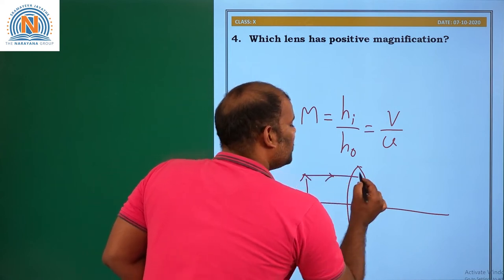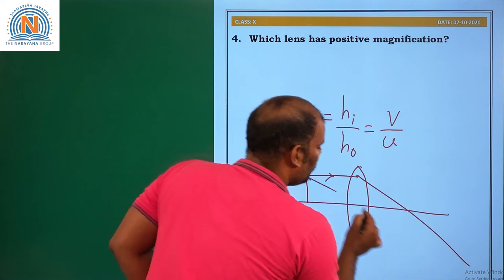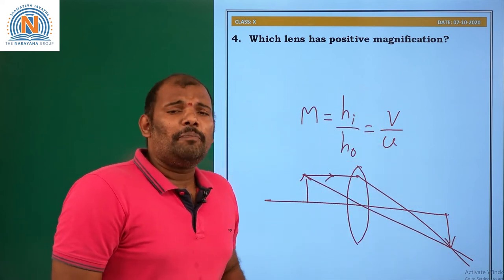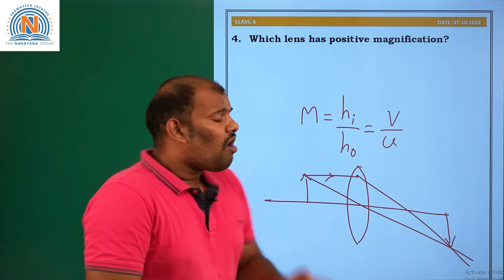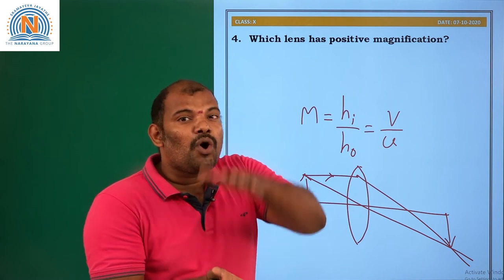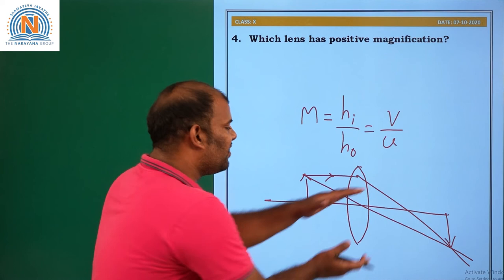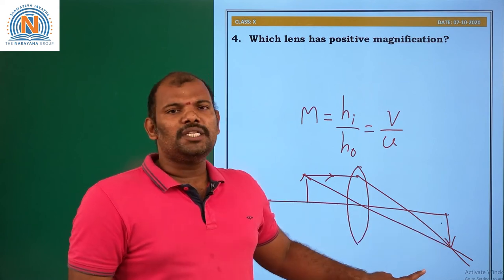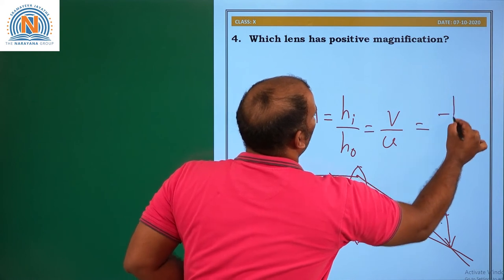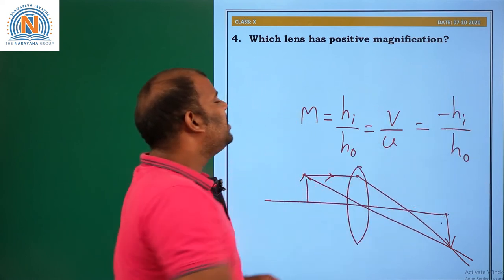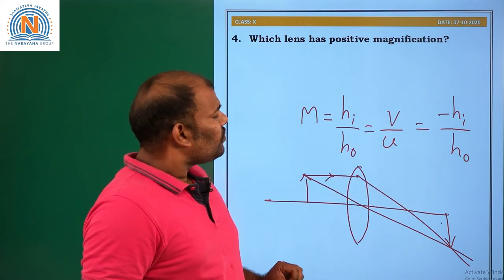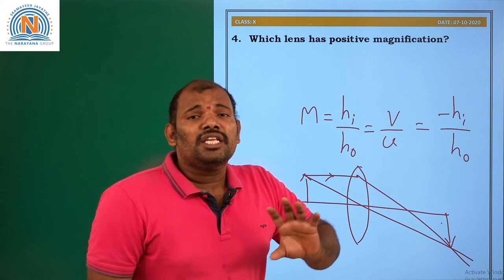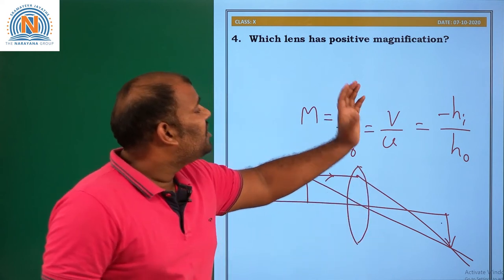Let us draw a simple image formation diagram. Here you got the image. Height of the object is positive — all distances measured above the principal axis are positive, and below the principal axis are negative. This is a real image, which is inverted and below the principal axis, so you get the value minus H-I over H-O. In the case of a convex lens, you have negative magnification. But in the case of a concave lens, or when you have a virtual image, you get positive magnification.